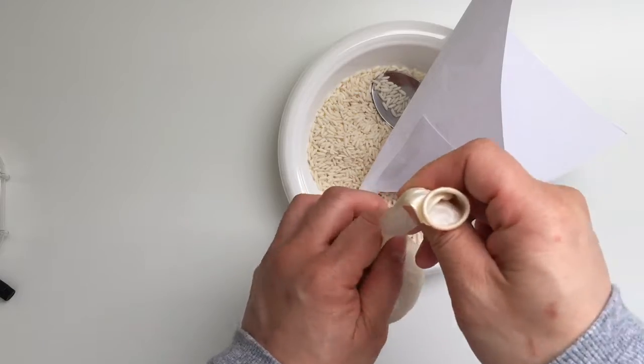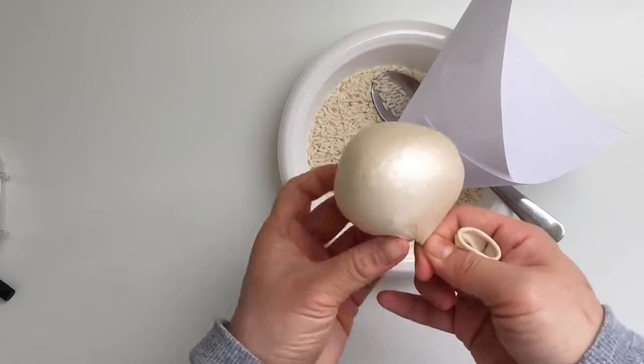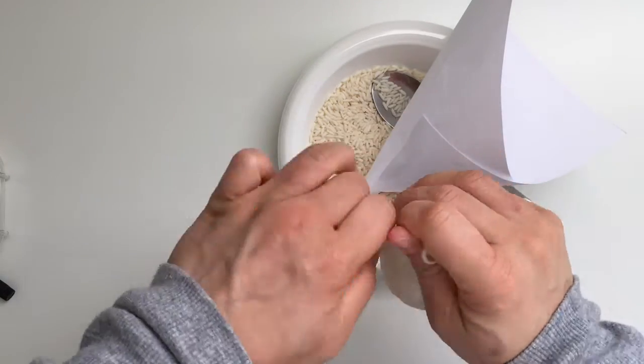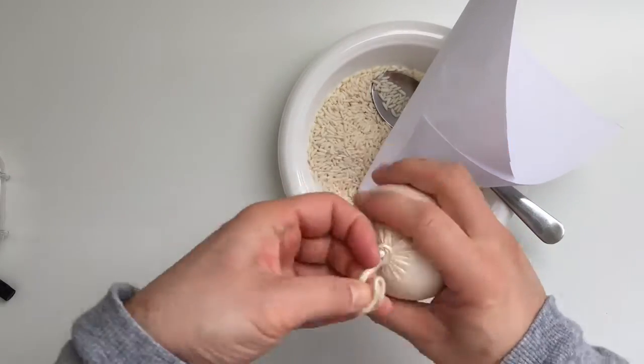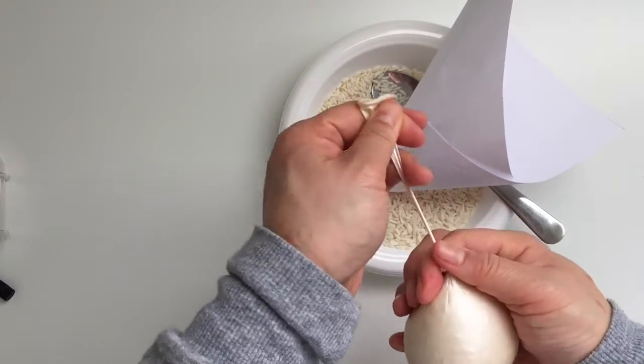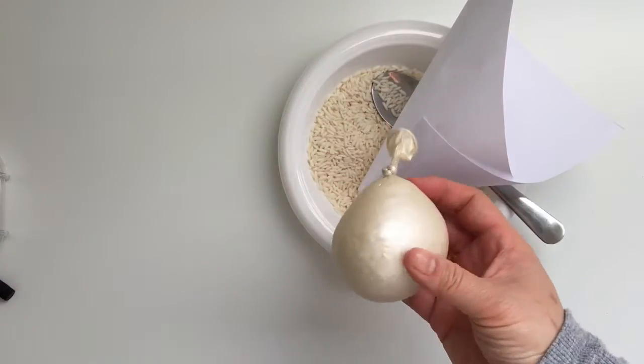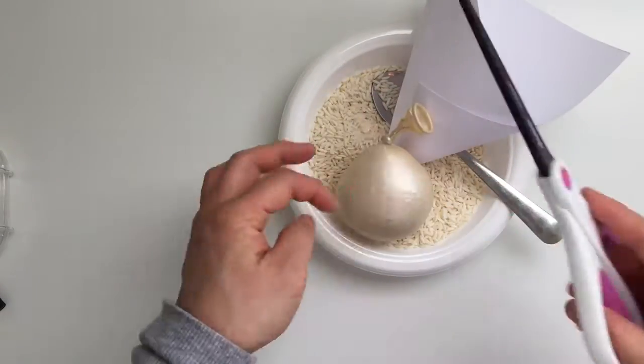Once we've got our stress ball to our ideal shape and size, what we're going to do is squeeze out the air and twist it around and then tie a knot. Once we've done that and secured it, get your scissors and we're just going to cut off the excess bit there.